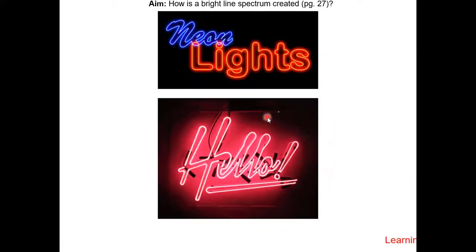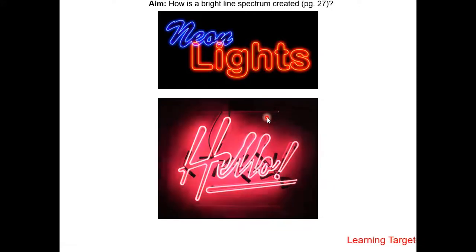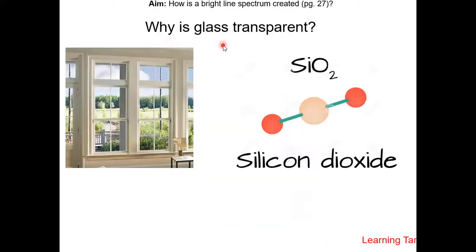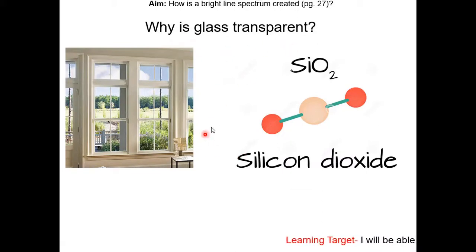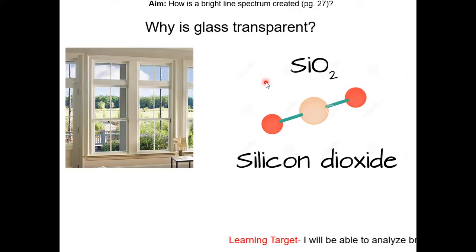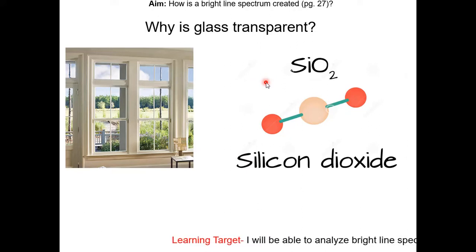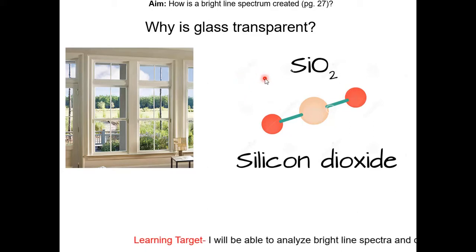Neon lights work the same way as the flame test, the bright light spectrum, and fireworks. Why is glass transparent? Pause this video and watch a TEDx video about glass — it is related to the ground state and excited state. Resume this video once you've watched it.